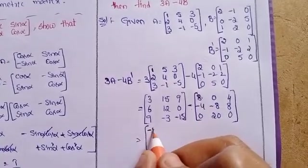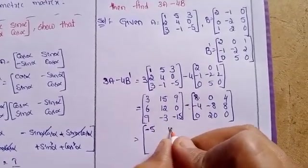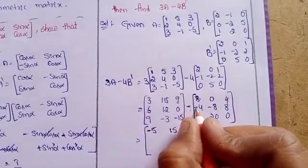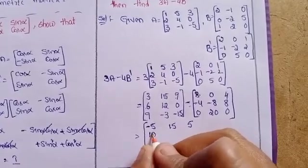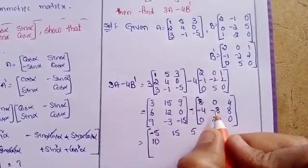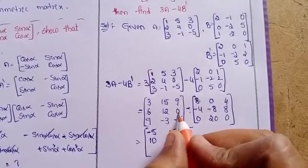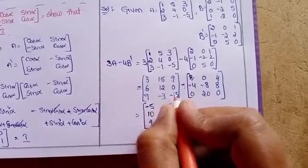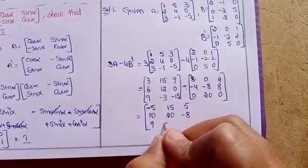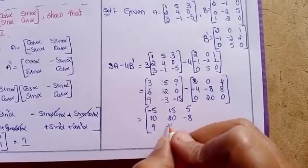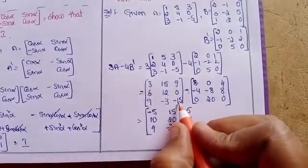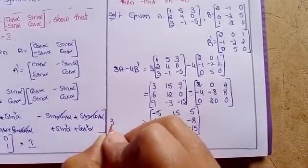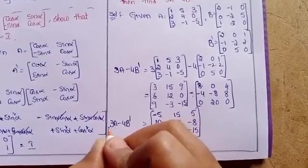Subtracting: 3 minus 8 equals minus 5, 15 minus 0 equals 15, 9 minus 4 equals 5, 6 minus minus 4 equals 10, 12 minus minus 8 equals 20, 0 minus 8 equals minus 8, 9 minus 0 equals 9, minus 3 minus 20 equals minus 23, minus 15 minus 0 equals minus 15. This is the result of 3A minus 4B transpose.